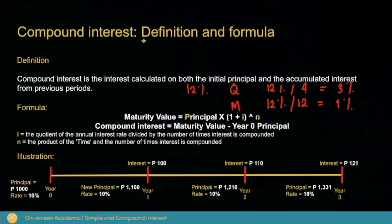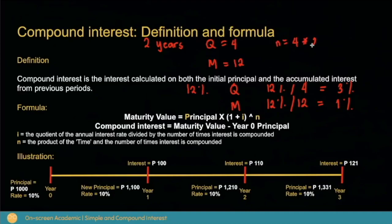Now let's get the value of n. Let's say our time period is 2 years and we are compounding it every quarter or every month. Since there are 4 quarters within a year, we will use the factor of 4, and since there are 12 months within a year, we will use the factor of 12. To get the value of n compounded every quarter for 2 years: n equals 4 times 2, which gives 8. For monthly compounding: n equals 12 times 2, which gives 24.